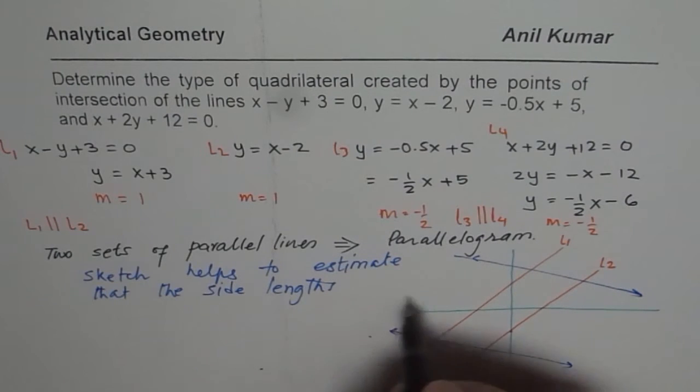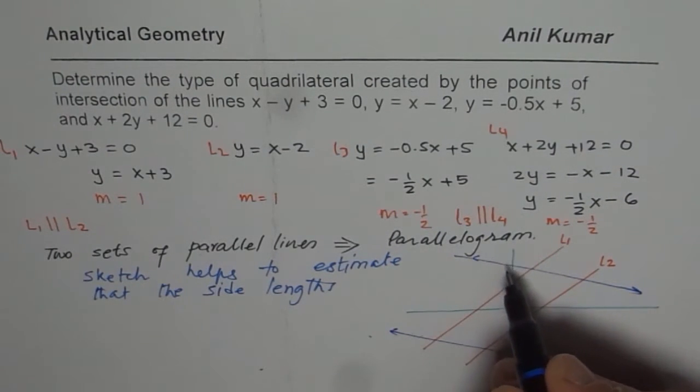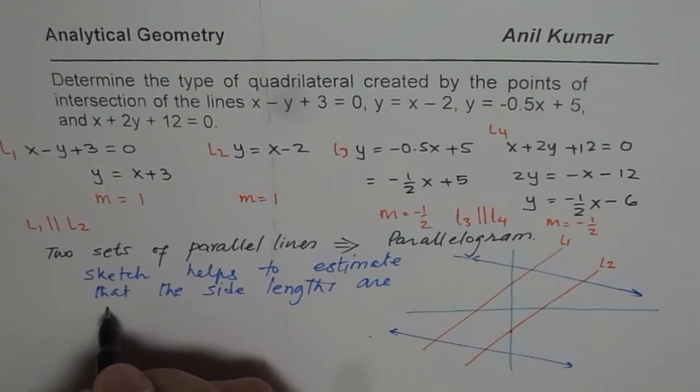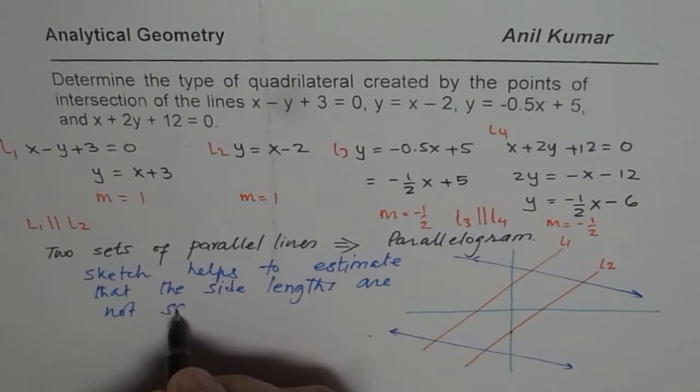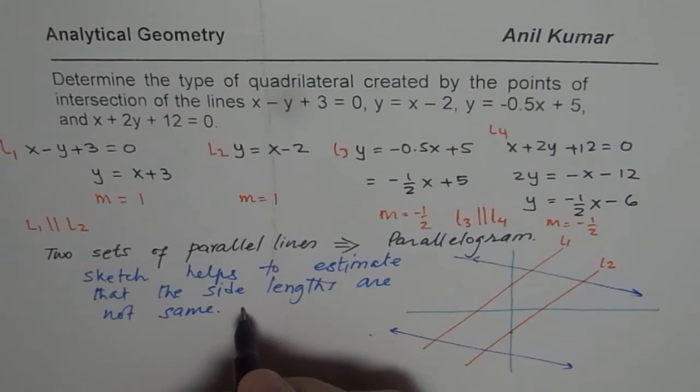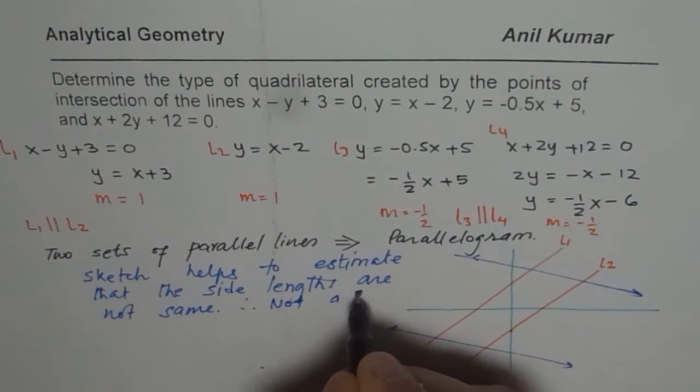that sketch helps to estimate that the side lengths, I should say that adjacent side lengths, are not same. Therefore it is not rhombus, therefore not a rhombus.